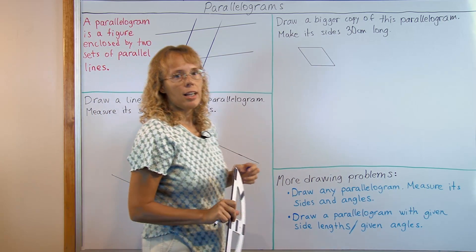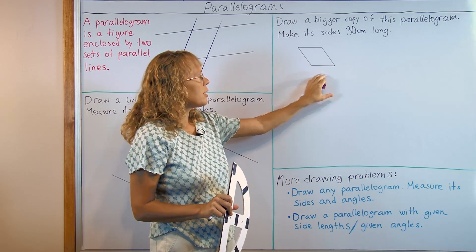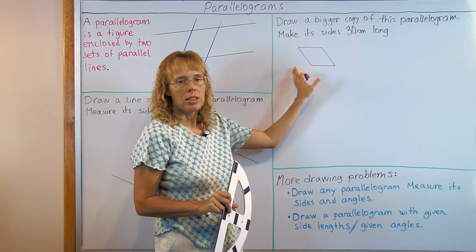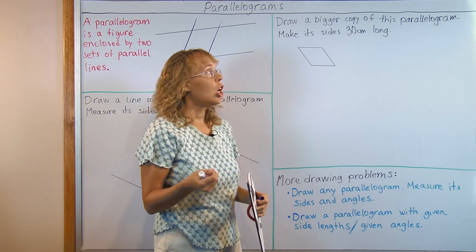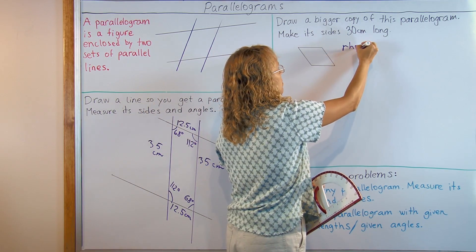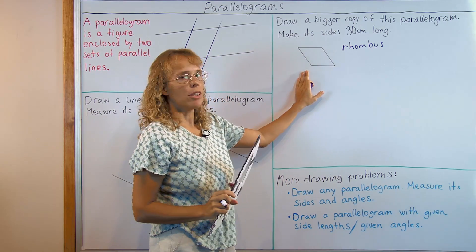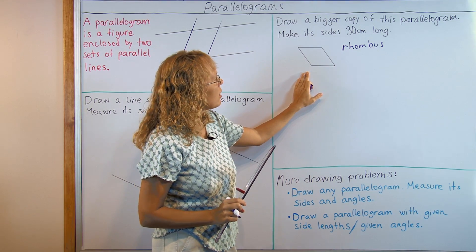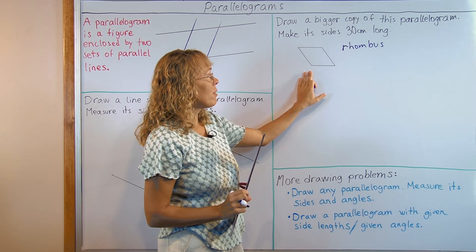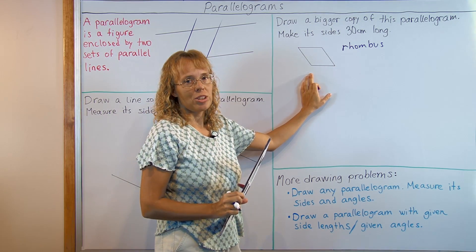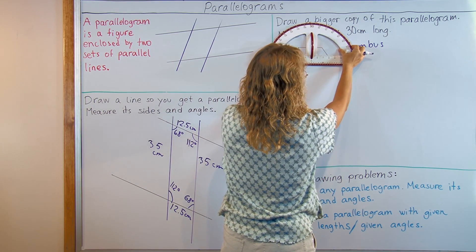Now let's go on. Here's another drawing exercise. Draw a bigger copy of this parallelogram, make its sides 30 cm long. This parallelogram, all of its sides are equal, or its sides are congruent, we say. And that kind of parallelogram has a special name, it's called a rhombus. And if I want to draw a copy of it, I need to know something, right? I already know it tells me to make the sides 30 cm long. But to make an exact copy of this parallelogram, I need to know its angle measures. So for that, I need to actually measure how long are the angles. I mean, not how long, how big are the angles.